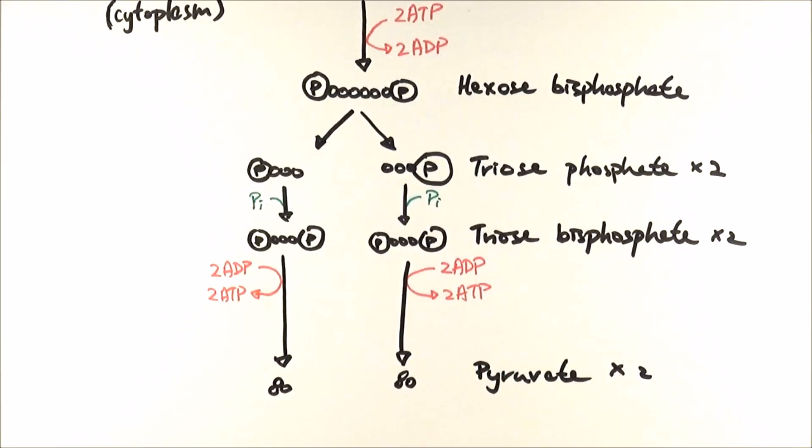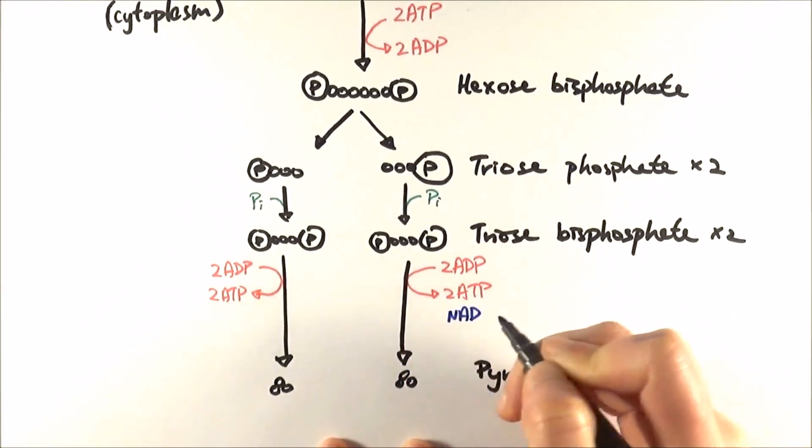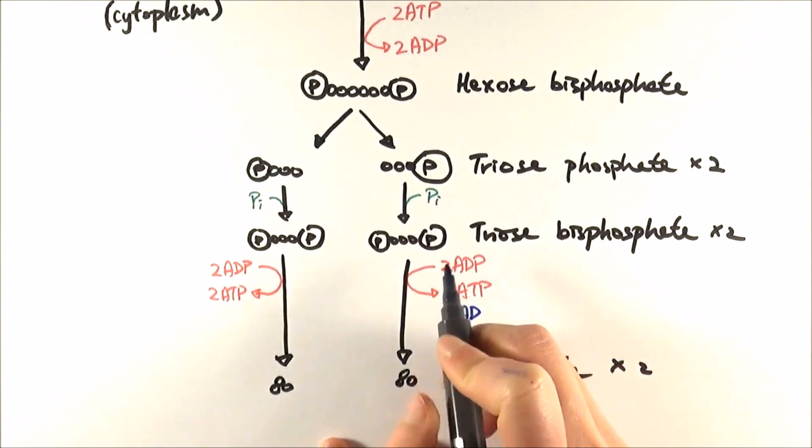After that, we also need to rearrange the molecules a little bit to make pyruvate. Here comes a coenzyme called NAD, and what it does is it comes along and steals a hydrogen atom from triose bisphosphate, and NAD itself becomes reduced.